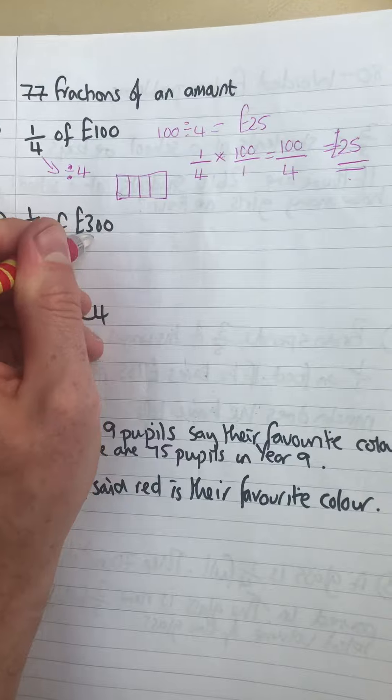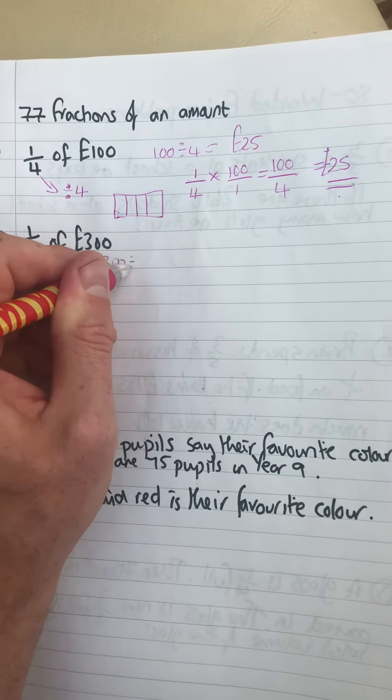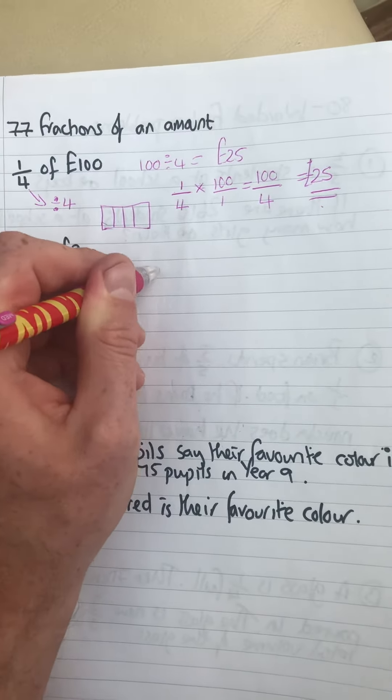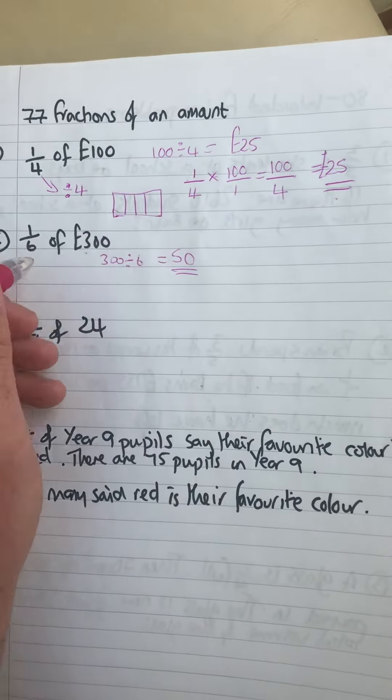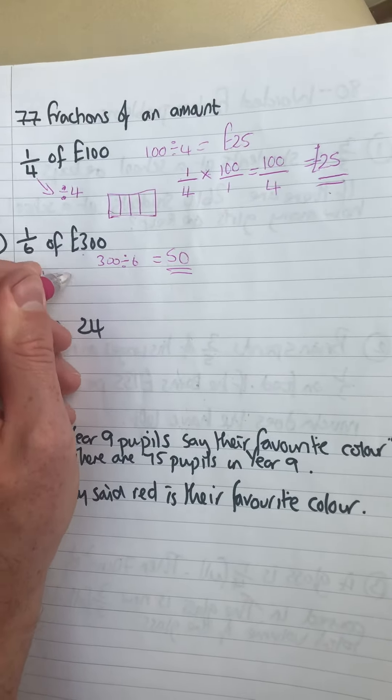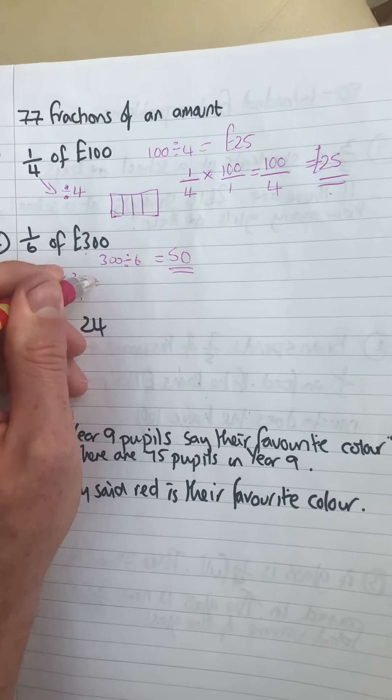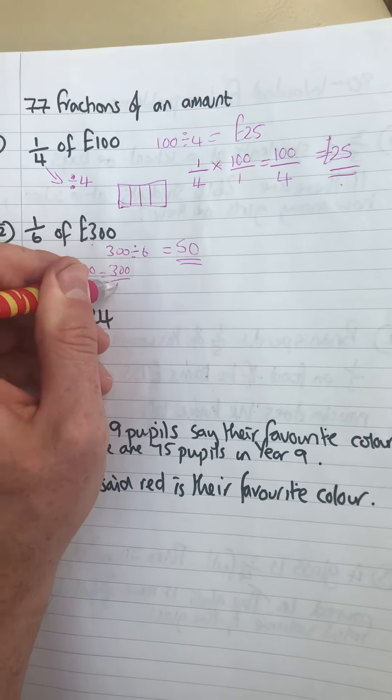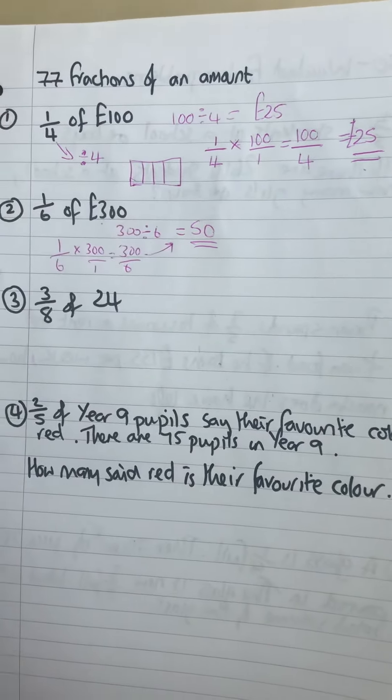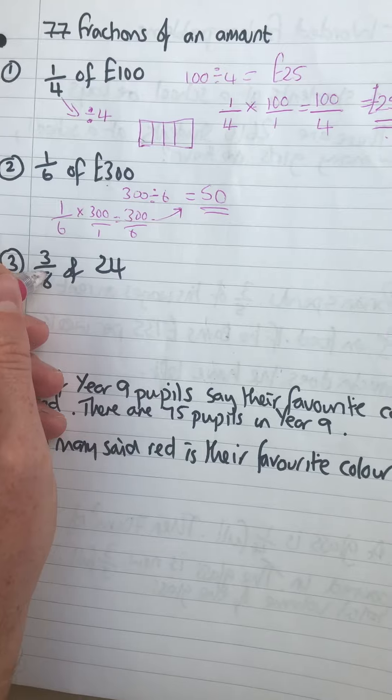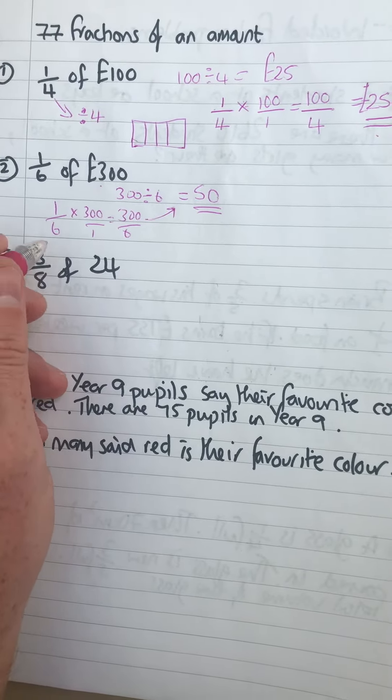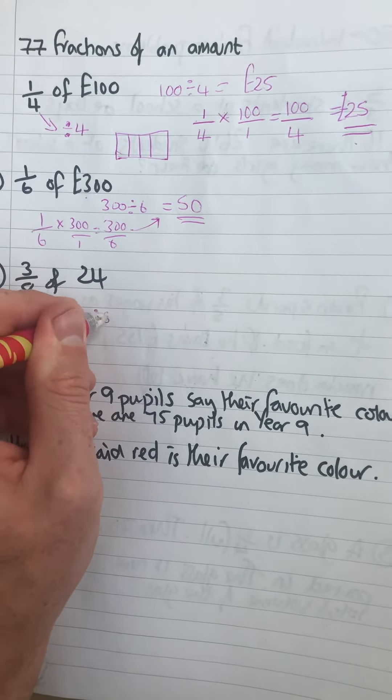Next one. This is the same as 300 divided by six which is 50. Or a sixth times 300 over one is 300 over six, cancel down and you get 50. Next one, so one eighth will be 24 divided by eight.